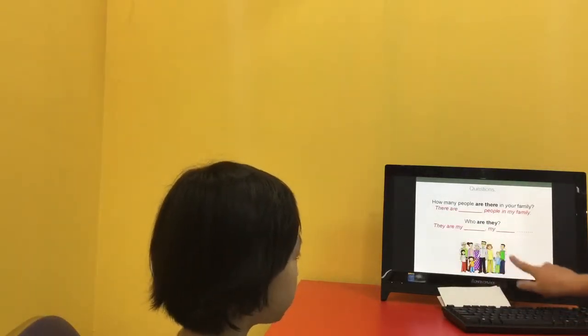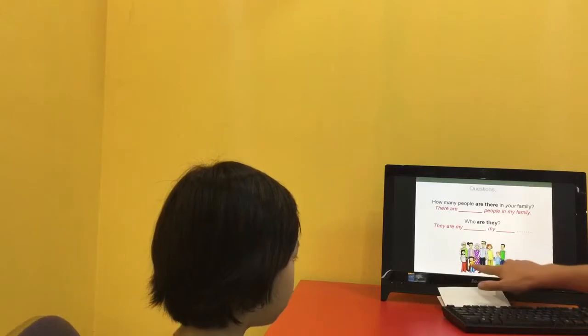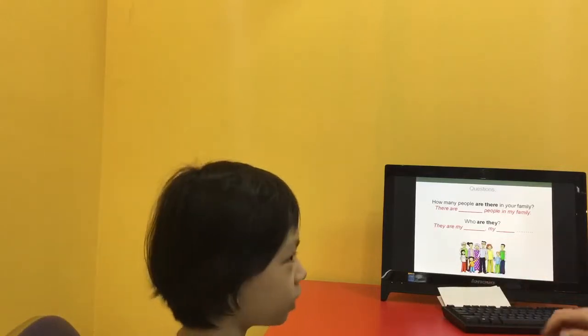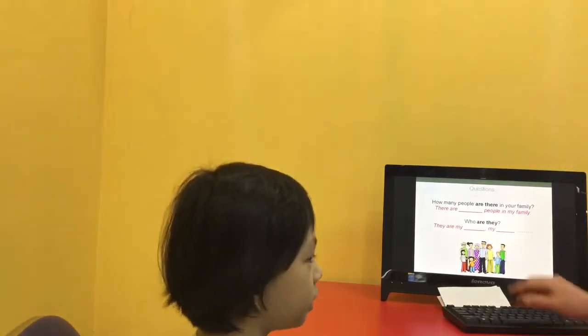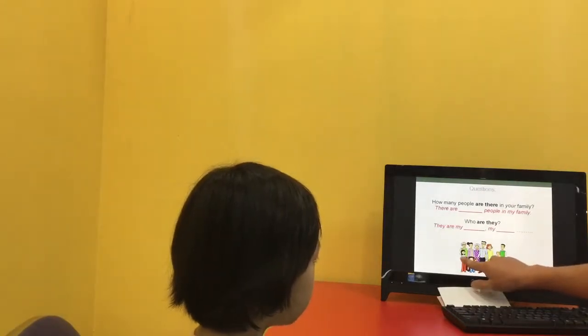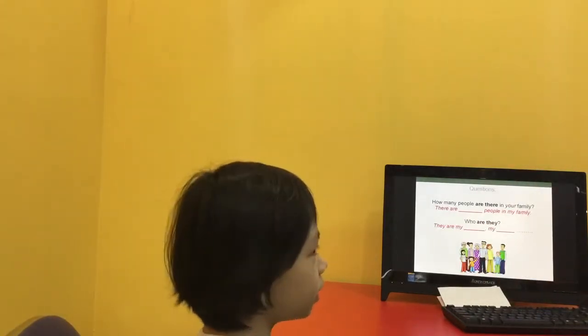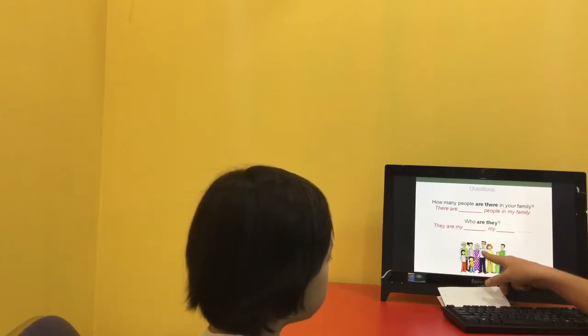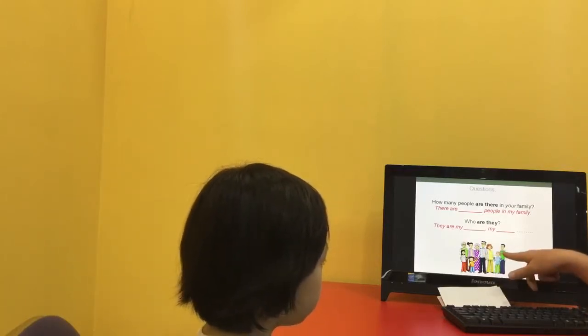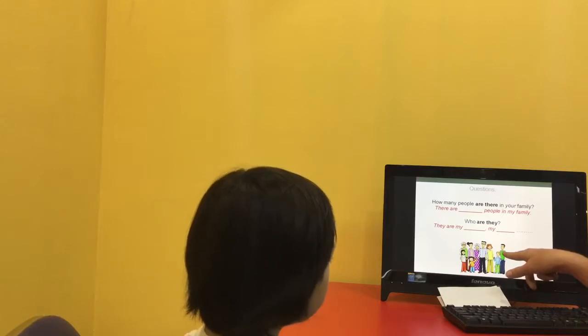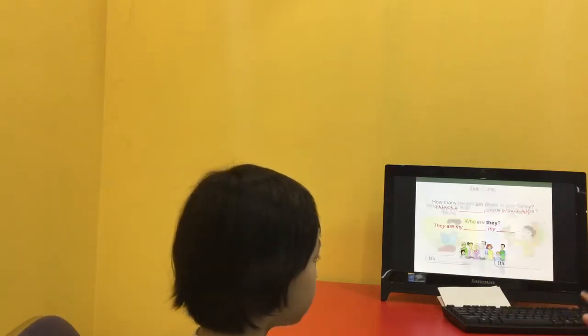This is Billy's family, okay? Is this Billy? Yes, he is. Is she Billy's sister? Yes, she is. Is he Billy's dad? Yes, he is. Is he Billy's mum? No, he isn't. Good girl, well done.